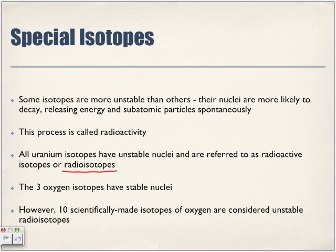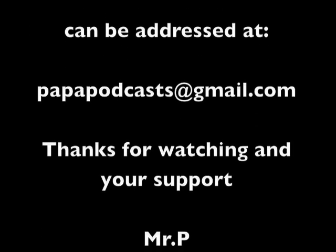There are three known oxygen isotopes. All are stable. But they've synthesized, they've created ten completely unstable ones. So ten radioactive isotopes for oxygen. And again, we will look at that when we get into chapter four.